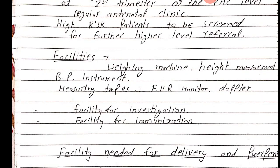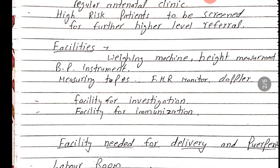Height measurement ke liye BP instrument, measuring tape, fetal heart rate monitor, Doppler — yeh sab facilities hoti hain. Facilities for investigation: blood investigation aur urine investigation pregnant women ka. Blood investigation mein haemoglobin level ya blood group check karna. Urine mein urine albumin level, sugar level, microscopic examination, and facilities for immunization — mother ka aur neonate ya infant ka immunization ki facilities.